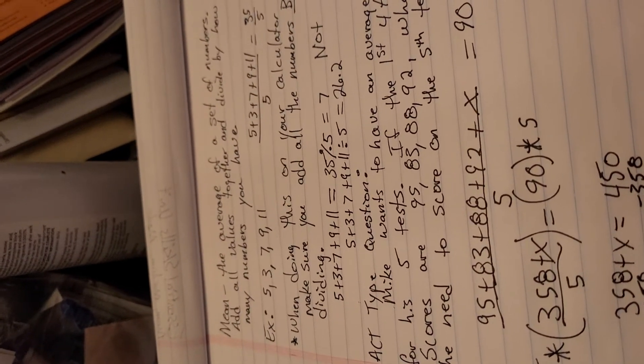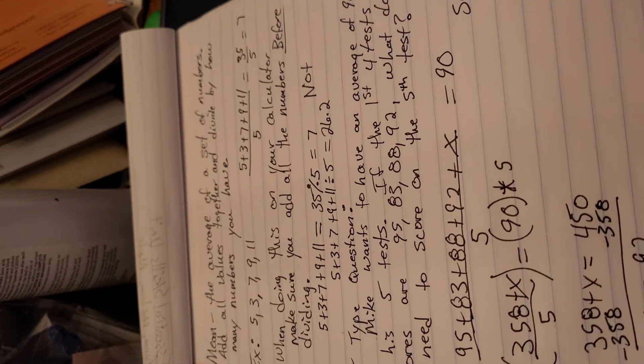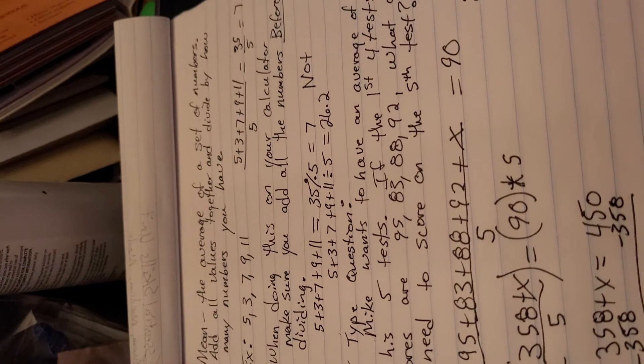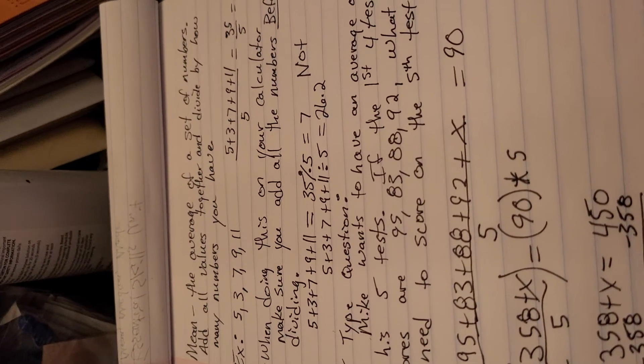The mode is the number, or data values that occur most often. It's not necessarily the largest number, but it's where you have the most numbers or any repeats.